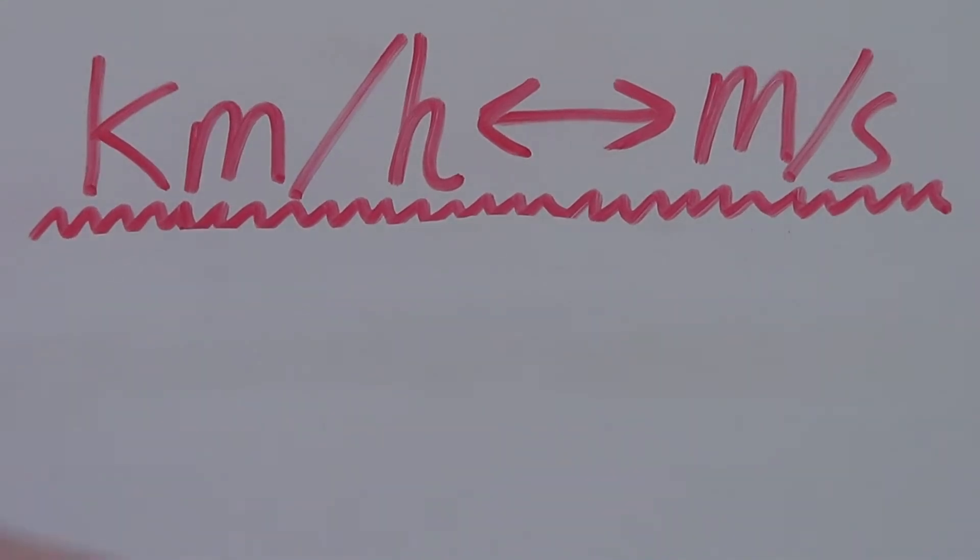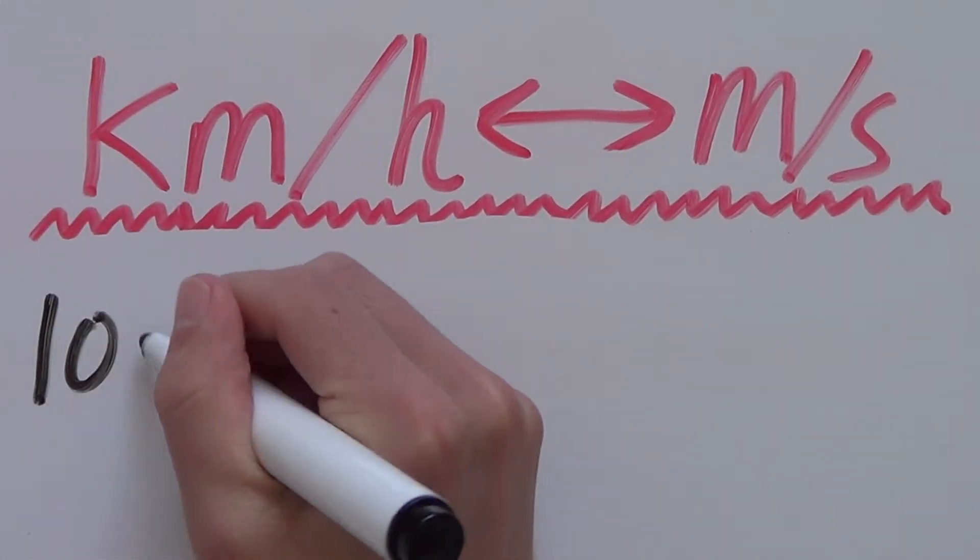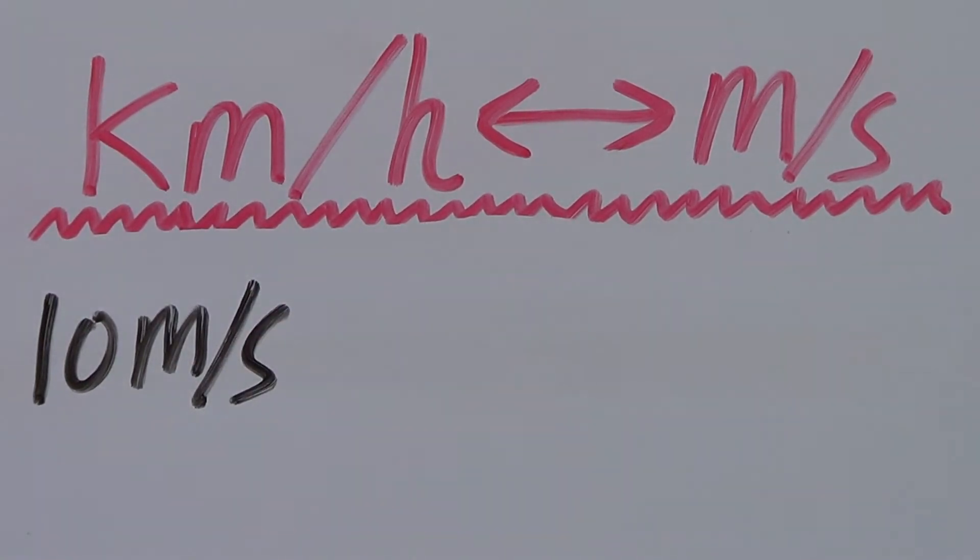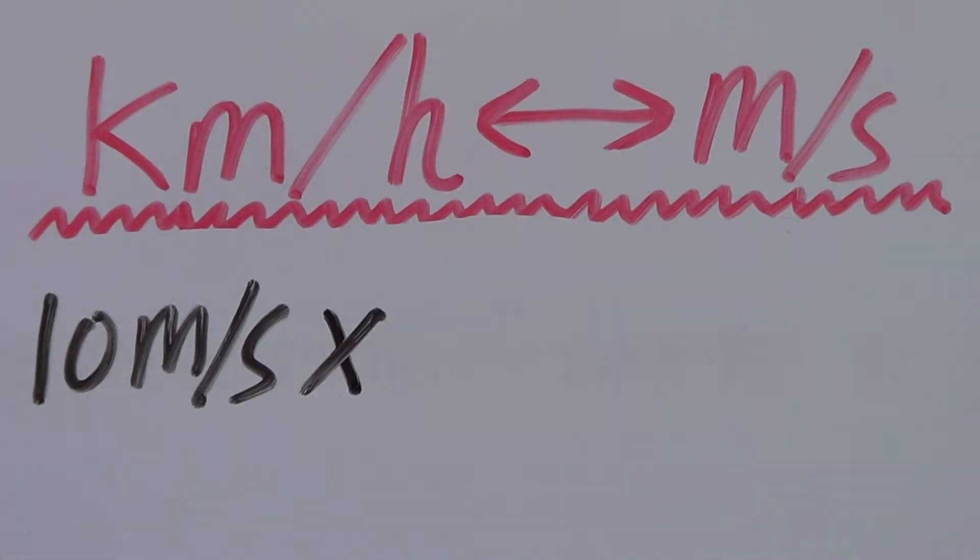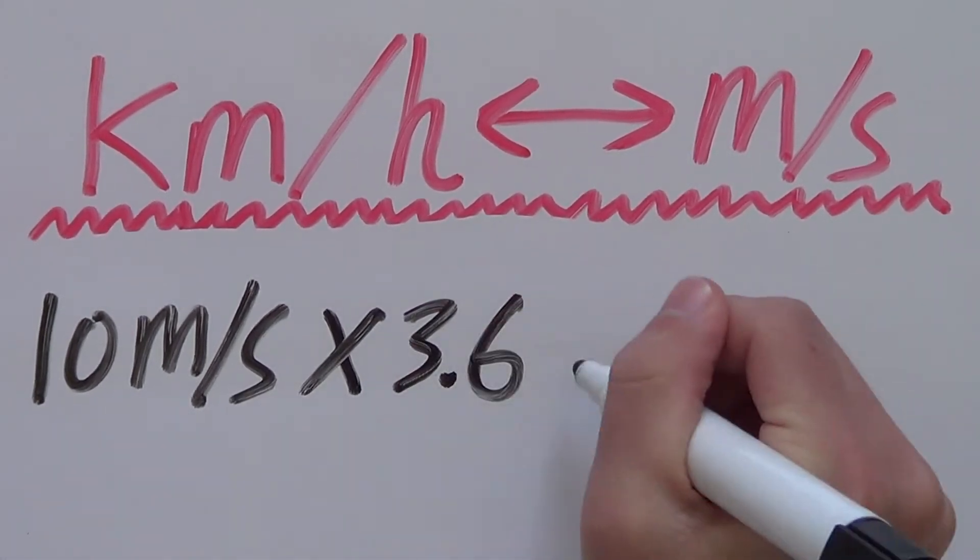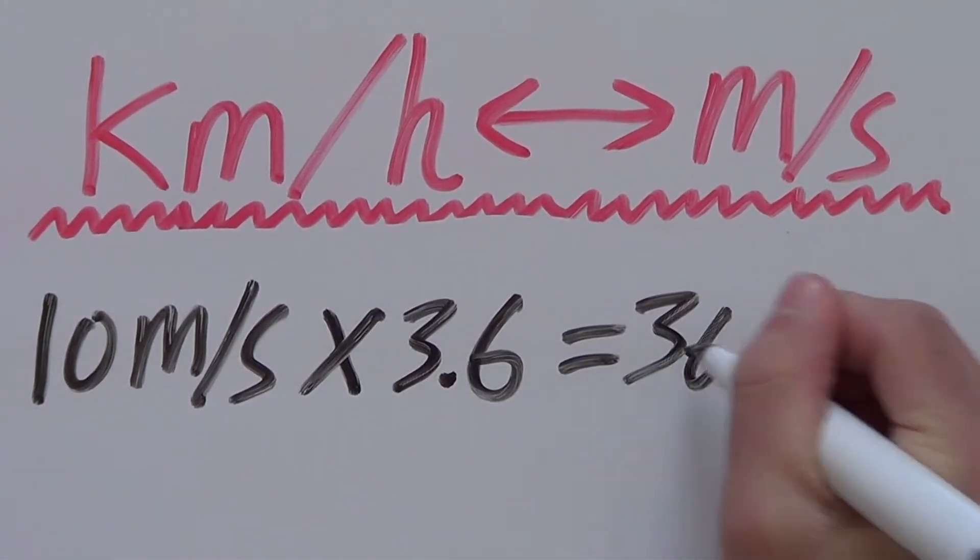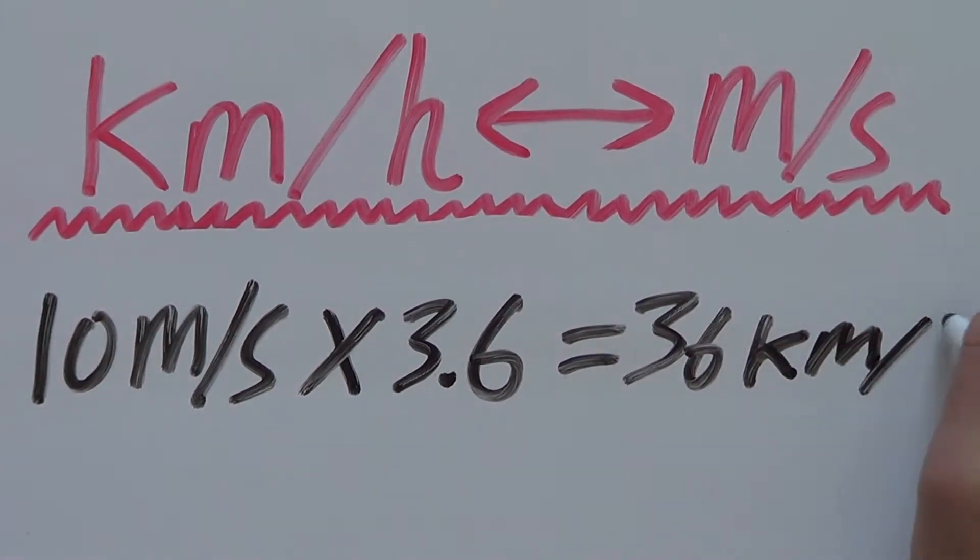So let's say we wanted to convert 10 meters per second to kilometers per hour. If you remember correctly, you multiply by 3.6, which will give you 36 kilometers per hour.